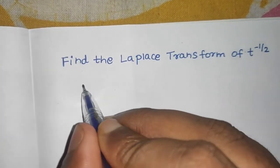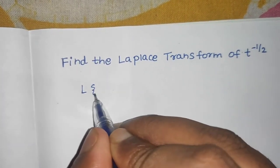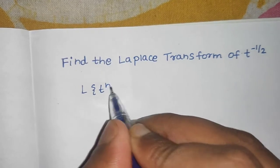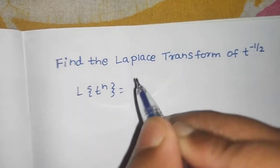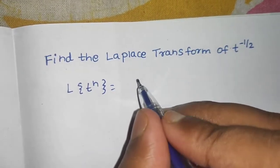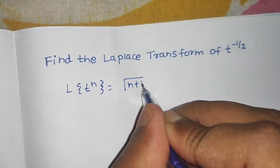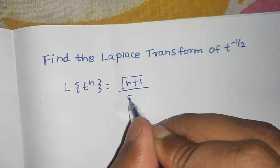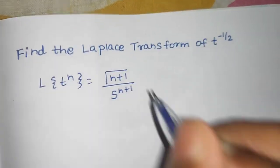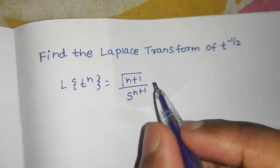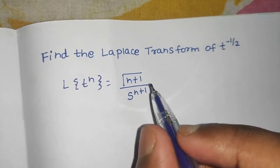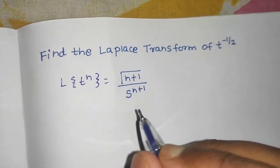We know one formula for Laplace: Laplace of t raised to power n equals gamma n plus 1 divided by s raised to power n plus 1, in case n is not a positive integer.